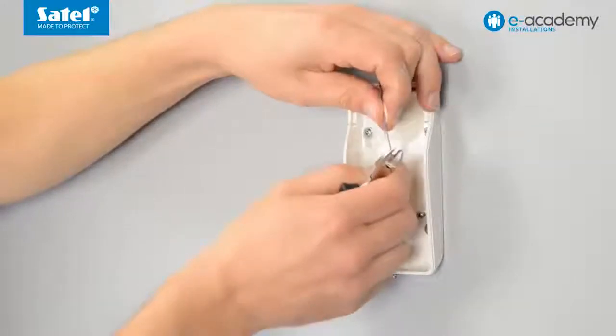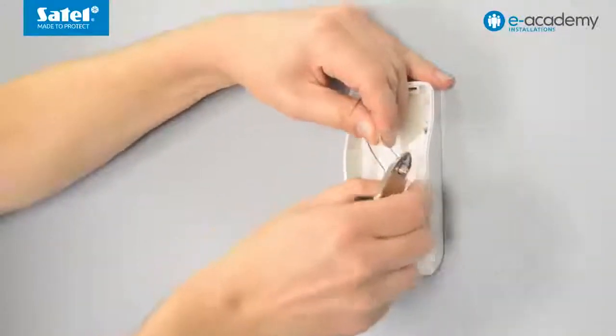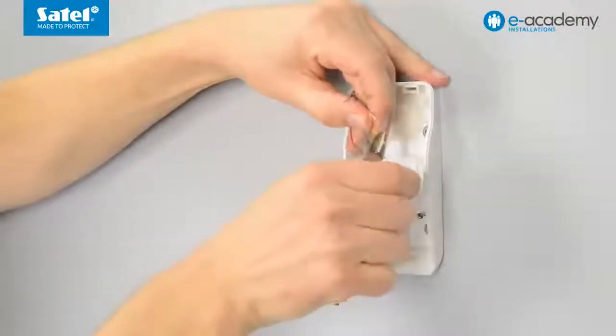Strip about one centimeter of wire insulation from the ends of all eight wires to make them ready for connecting to the electronics board.